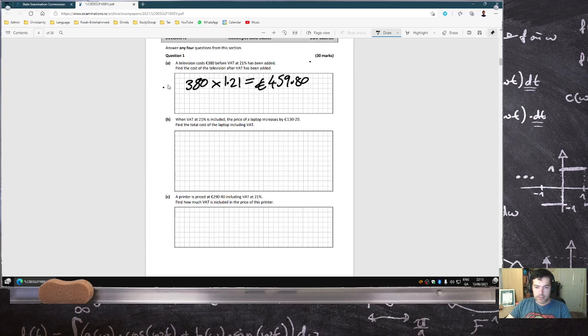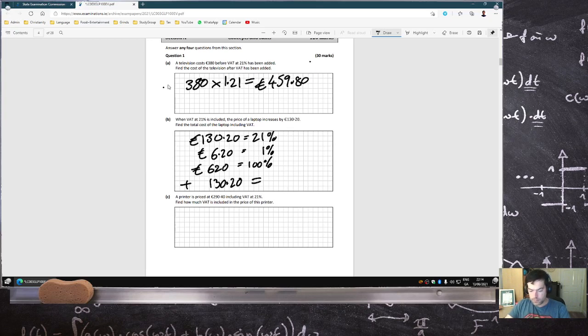When the VAT is included, the price is increased by 130.20. Find the total cost. Okay, so that 130.20, that's 21%. So if I divide that by 21, then that means 620 is 1%. Which means 620 is 100%. And then you add on the VAT, 750.20.